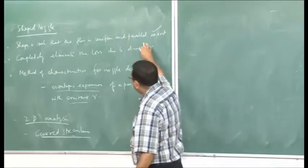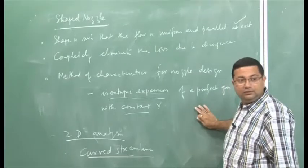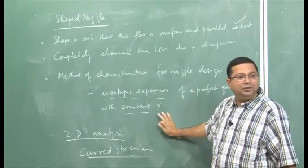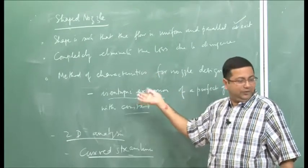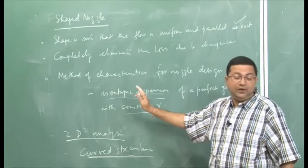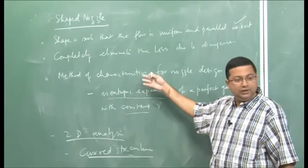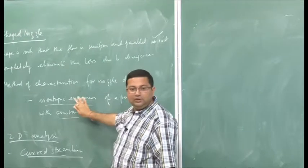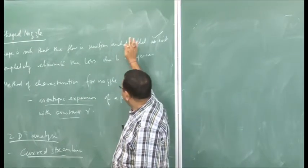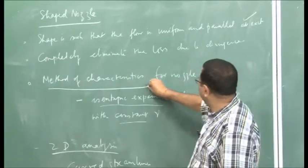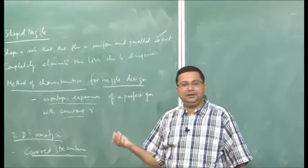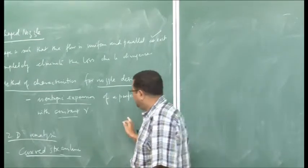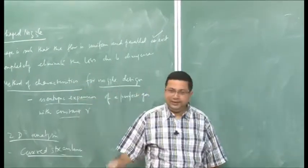Since the streamlines will be curved (unlike the straight streamlines in the conical nozzle), the component of pressure perpendicular to the streamlines must be considered. In the next class, we will discuss how to use the method of characteristics for nozzle design — to get the proper contour that eliminates the losses identified for the conical nozzle. I will stop here, and in the next class we will continue from here. Thank you.